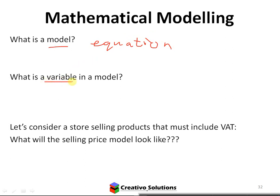So what is a variable? X is a variable, Y is a variable — so what is a variable? It's a placeholder. It's a placeholder for a value. Because we know demand could be representing maybe customers — so how many customers buy our goods? The variable would represent the number of customers, or the number of products.